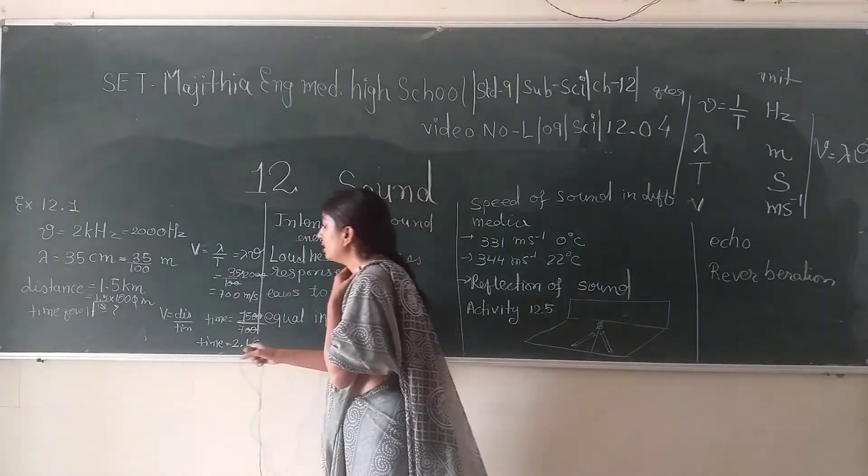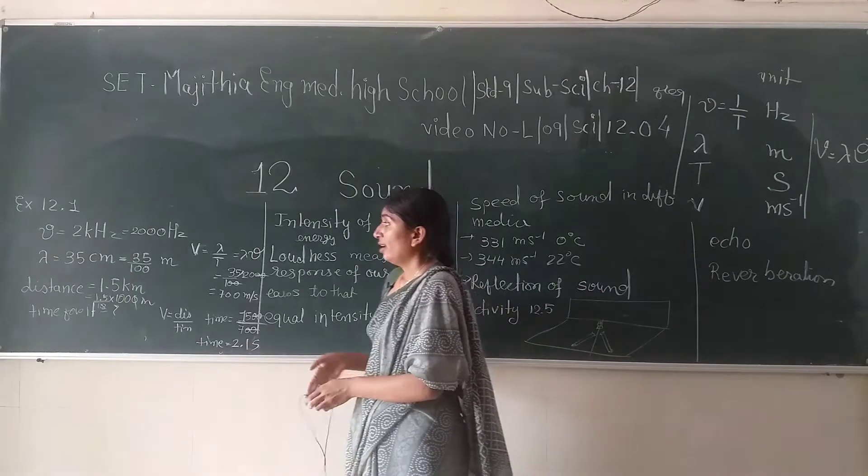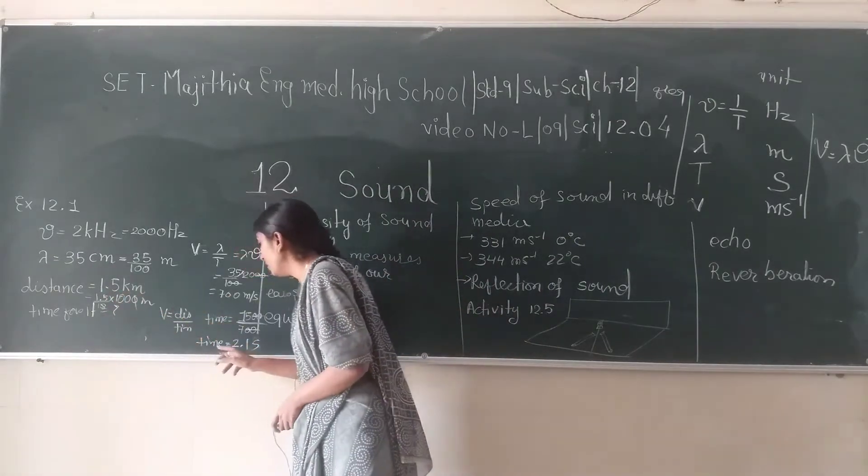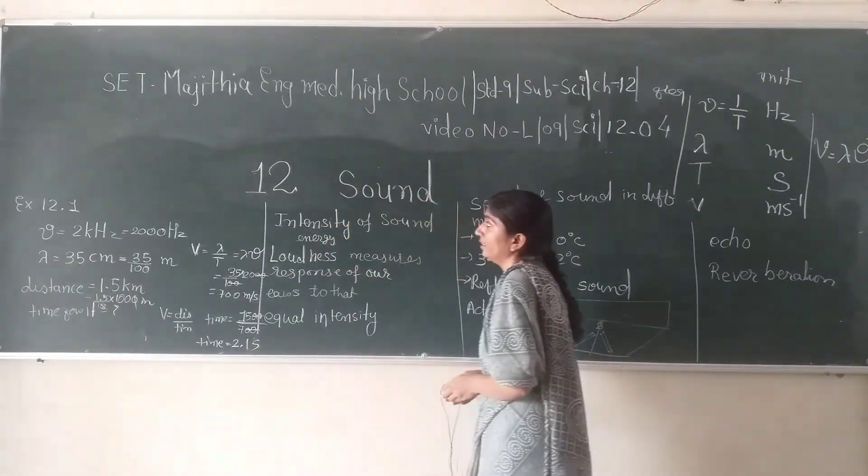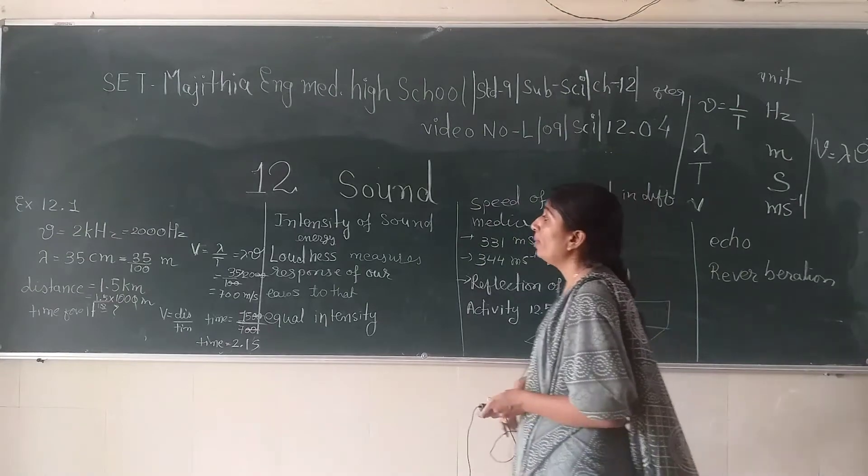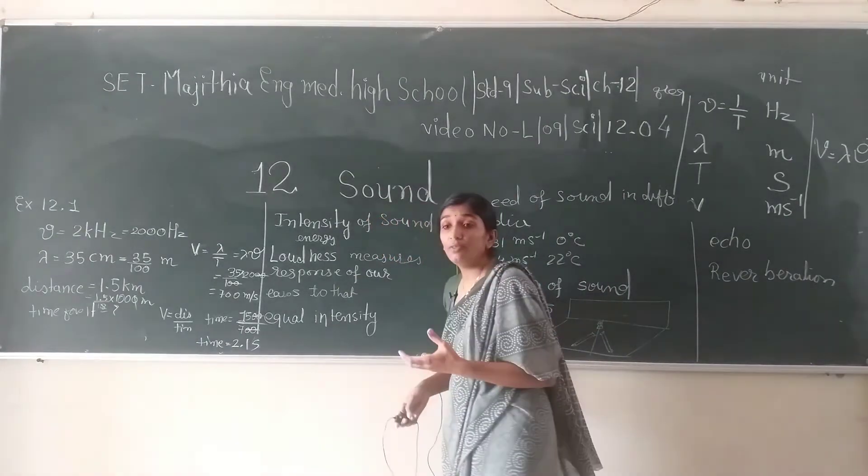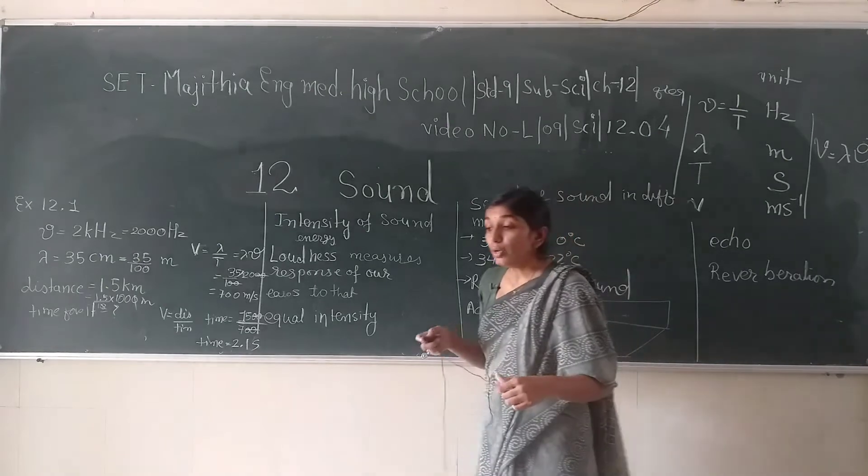The time for traveling 1.5 kilometers is 2.1 seconds. Next topic is intensity of sound. How can we define intensity?